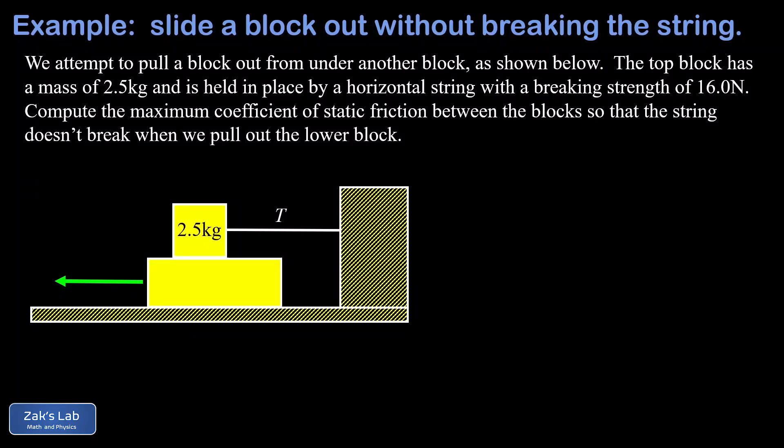In this problem, we're pulling a block out from under another block. We have a big block on the bottom and we're trying to slide that out from under this 2.5 kilogram block that sits on top of it. That 2.5 kilogram block is not going to go along because it's being held in place with this string, and we're told the string has a breaking strength of 16 newtons, so that's the maximum tension.